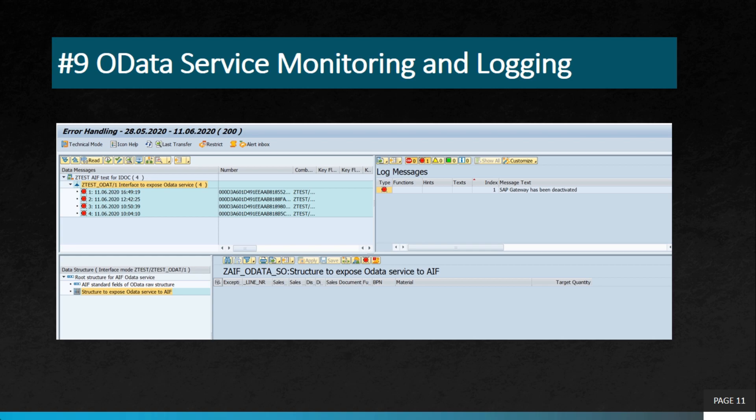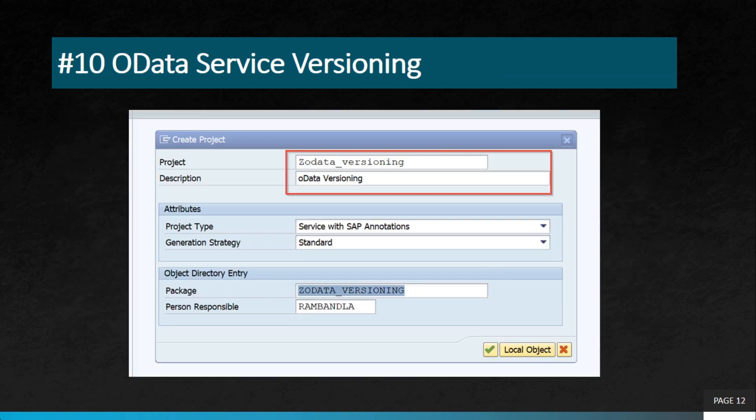The tenth project is OData service versioning. Developers can version their OData services, which helps businesses maintain compatibility with existing clients while making updates. You can create multiple versions of your OData API, so you should be aware of this practice.